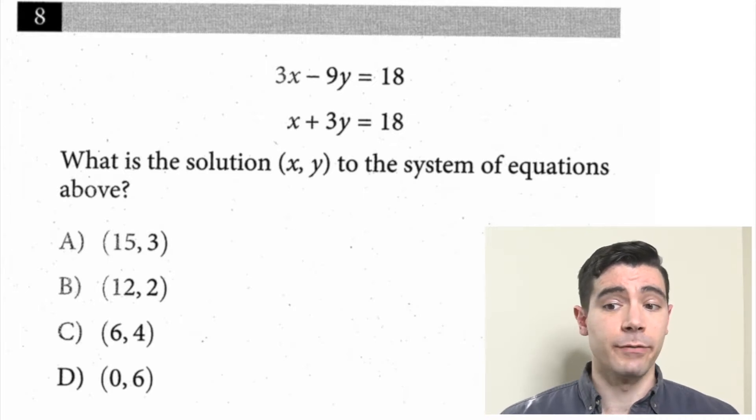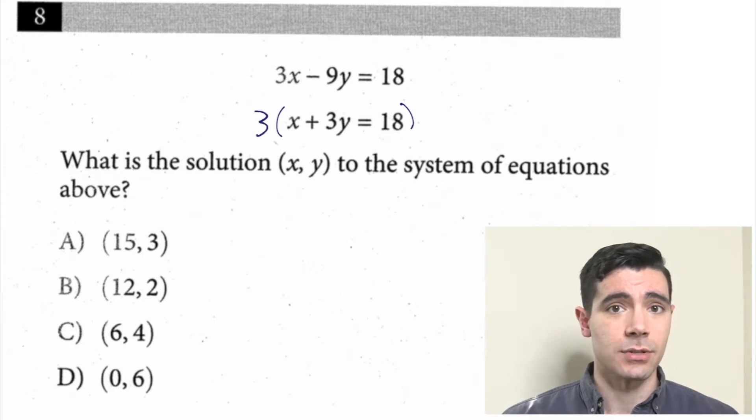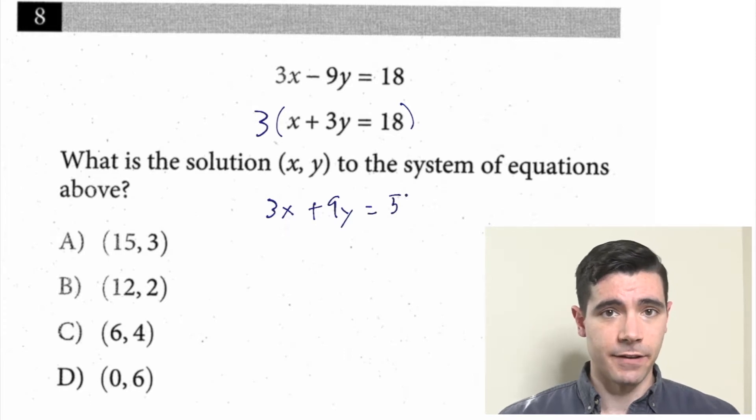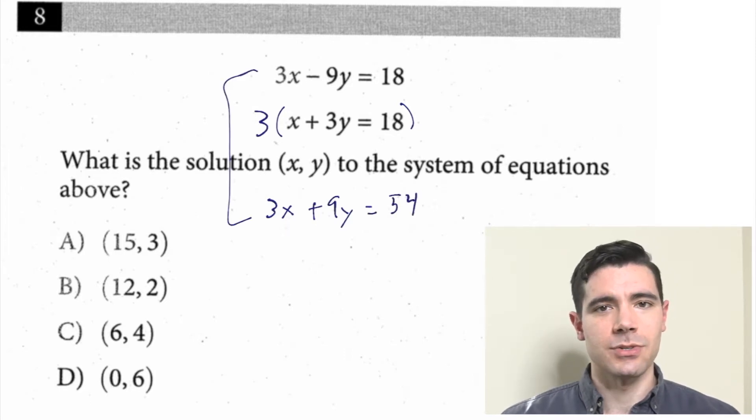So what could we do here? Looks like if we were to multiply the whole bottom equation by 3, we would have 3x in both equations. So let's do it. We distribute the 3. We got 3x plus 9y, and then 18 times 3 is 54.